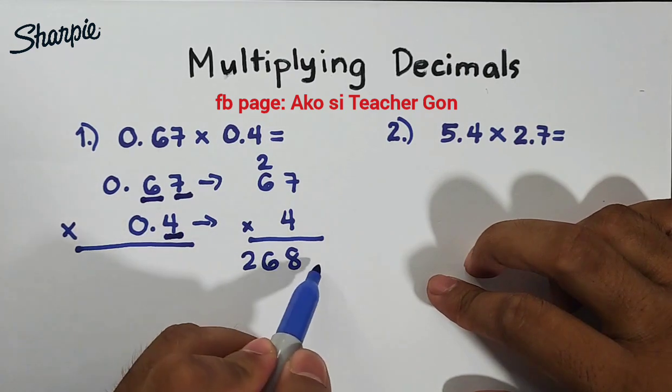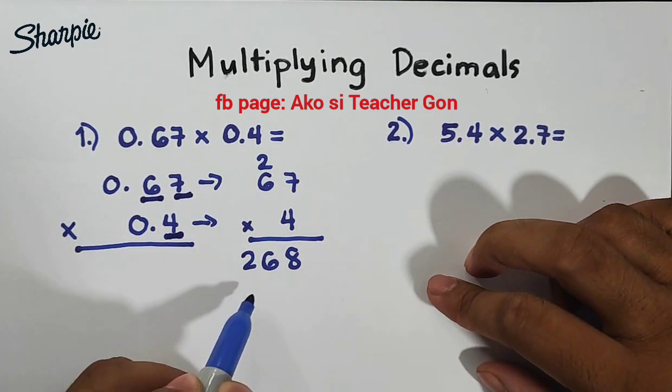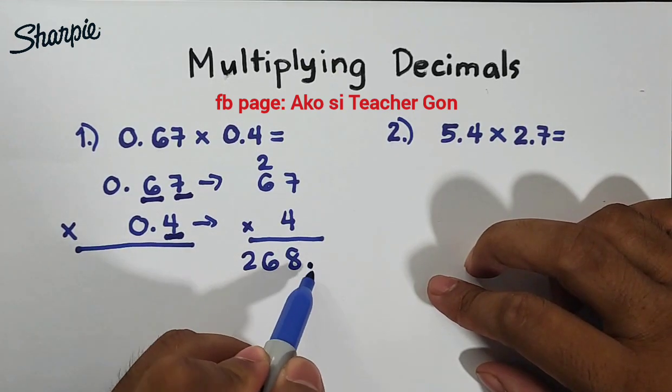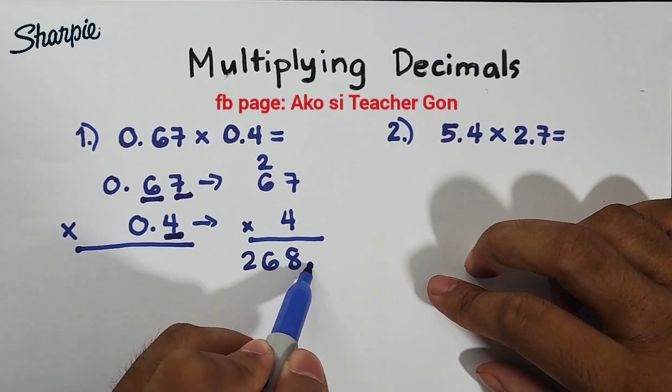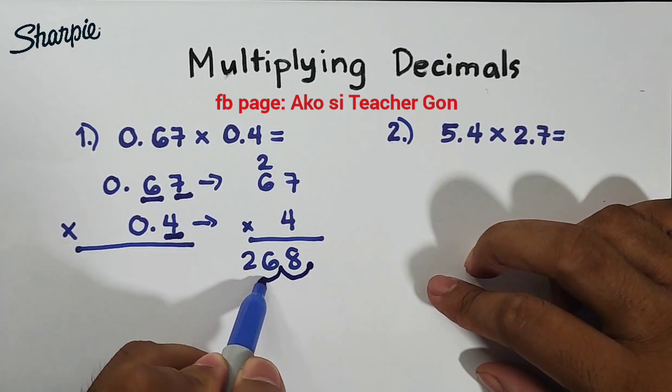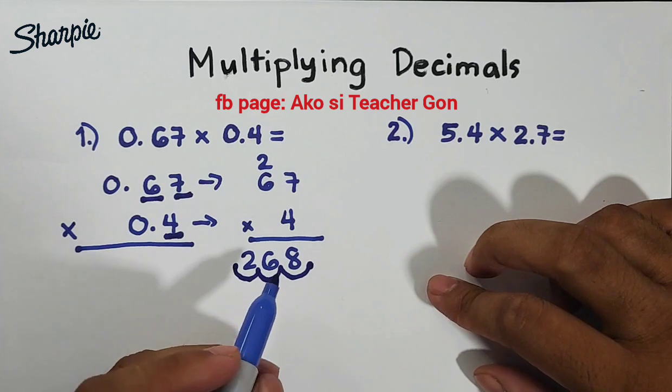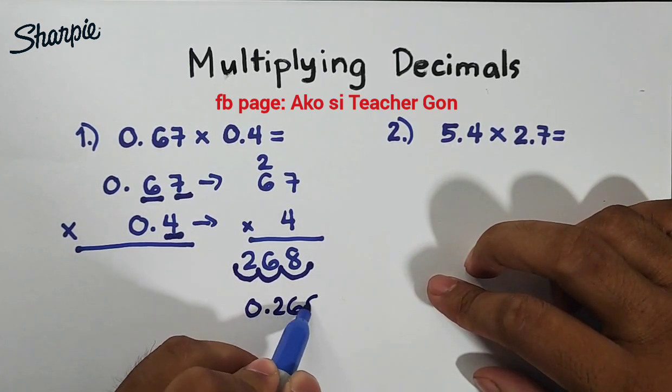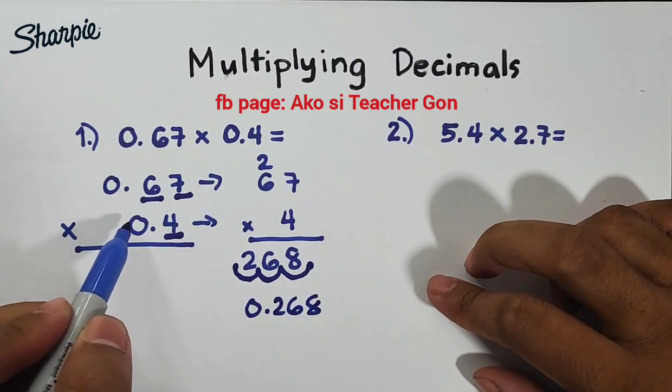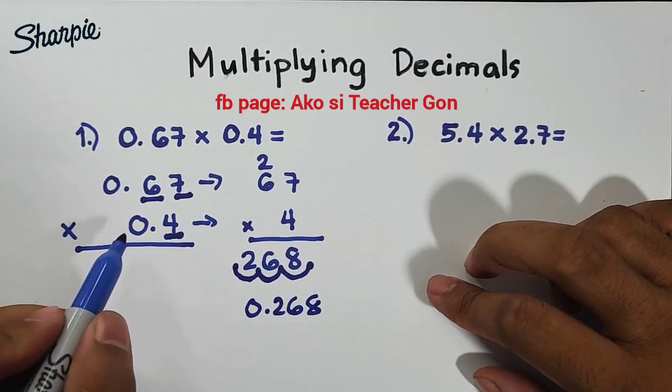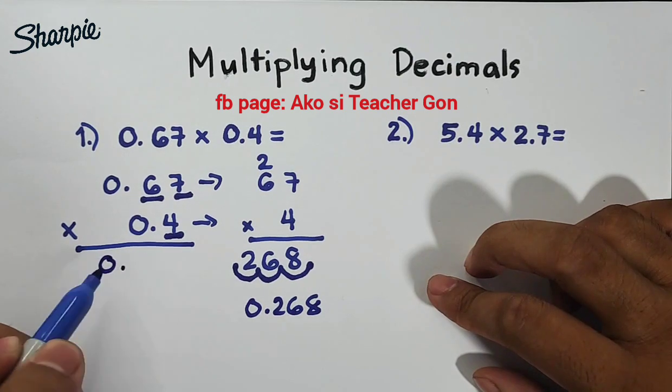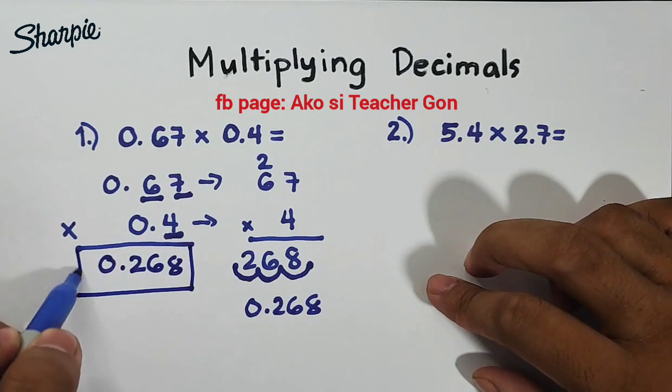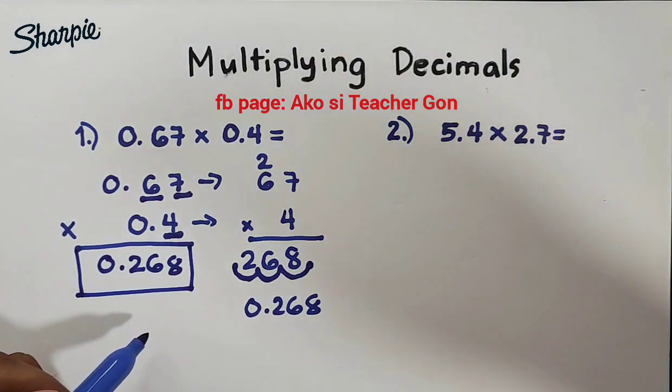So what we need to do here is to convert this whole number into a decimal using the three decimal places. From this point we will count three decimal places: 1, 2, and 3. We have 0.268, and that is the answer in multiplying 0.67 and 0.4. We have 0.268. This is our answer for item number 1.